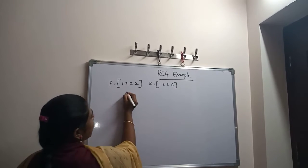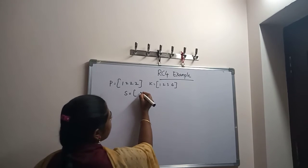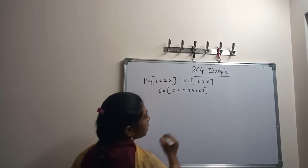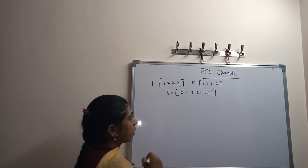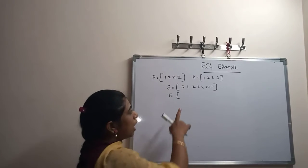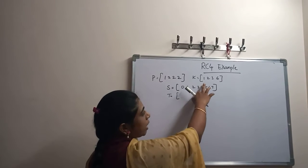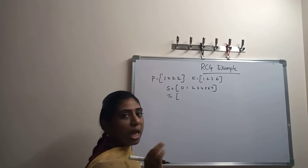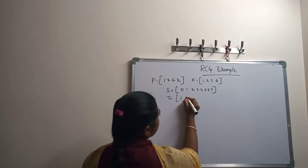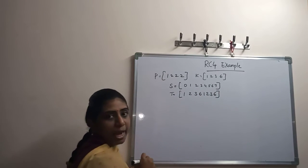We are going to write our initialized vector S, which will contain values 0 to 7. Since we are taking 8 bits, we represent it by 0 to 7. We also take a temporary vector equal to the initial vector. Since the key is not equal in length, we repeat 1236 to get 8 bits: 1236 and 1236.